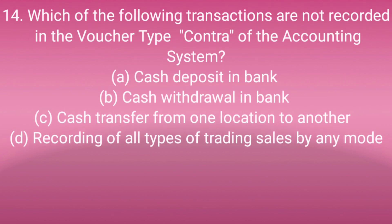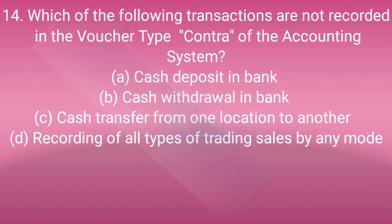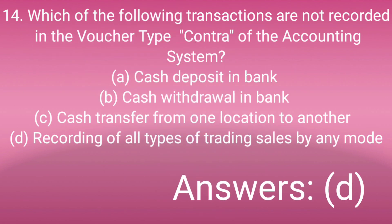Question number fourteen: Which of the following transactions are not recorded in a voucher type control of the accounting system? Option A: Cash deposit in bank, Option B: Cash withdrawal from bank, Option C: Cash transfer from one location to another, Option D: Recording of all types of trading sales by any mode. Answer is D. Answer is D.